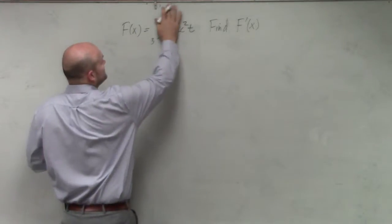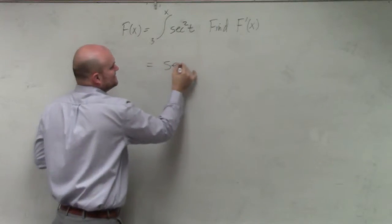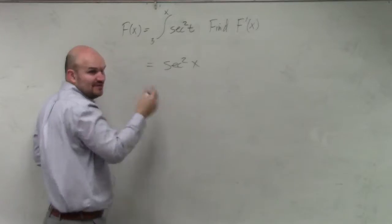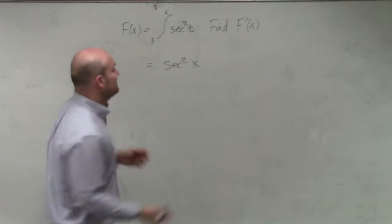if this was just x, then we know it's just going to end up giving us secant squared of x, right? So why go through all the steps of integrating and differentiating if we know we're just going to get back to secant squared of x? But the difference is...